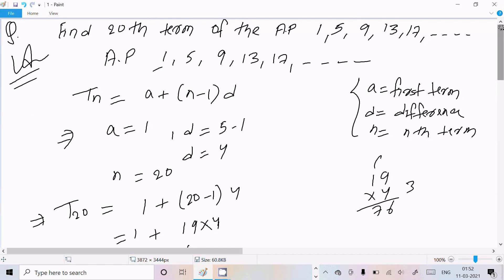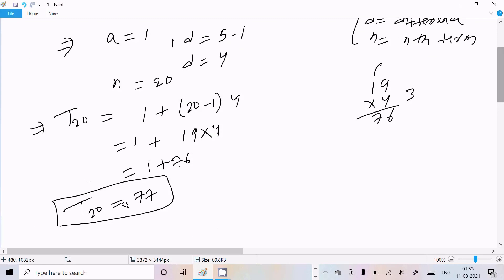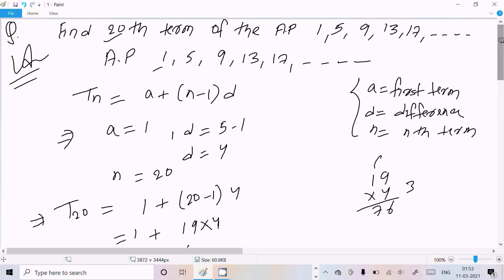So this is the way we can find out the 20th term of the AP. Write the AP, see the first term, thereafter calculate the difference, n is already given. After that you can calculate, so on the 20th place the value comes 77. So it will increase 17, next 21, 25, and then 77.